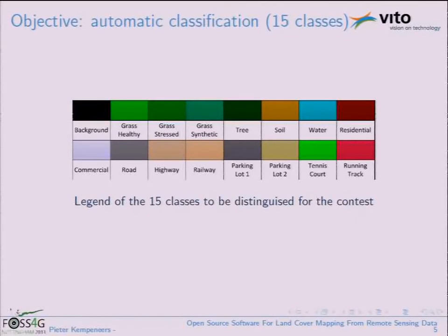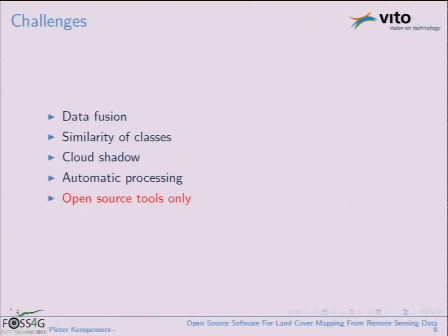The contest required automatic classification of 15 classes. There are several challenges: first, data fusion — you had to find the best way to combine the LiDAR height information with the spectral information. One challenge was the similarity between classes; some were very close to each other. There was also a cloud shadow cast on one part of the image, which turned out to be quite difficult, and I'll say now that I didn't solve it.